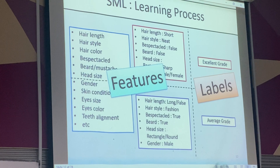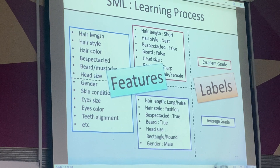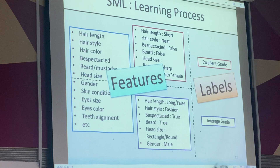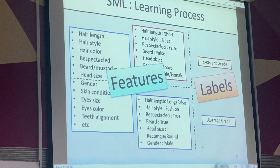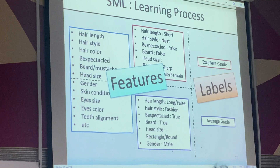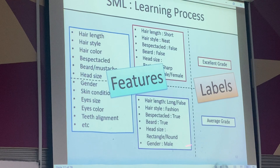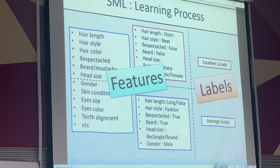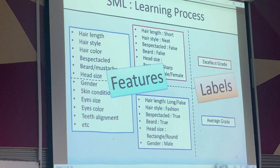To build supervised machine learning, you need two pieces of information: features and labels. We pump these two into the machine and let it learn. If you have these features, what is the label? This is how the machine learns — exactly like how humans learn. We look at the characteristics and know the answer.